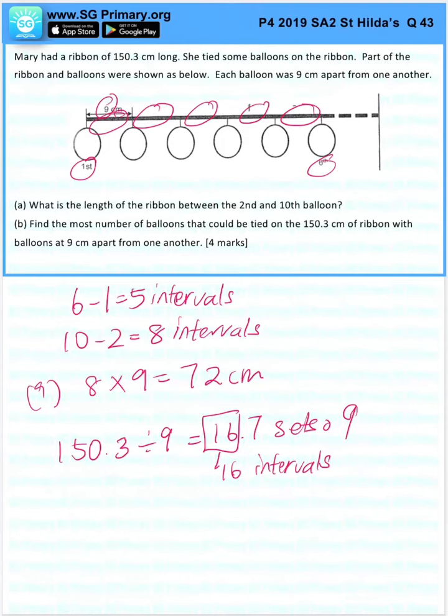Remember, for 6 balloons there were 5 intervals. So for 16 intervals, we need to add 1, giving us 17 balloons. This is the answer for Part B.